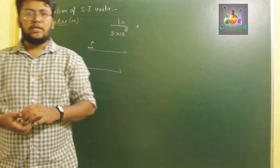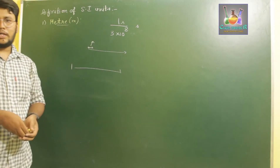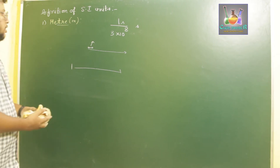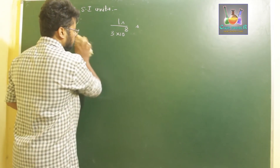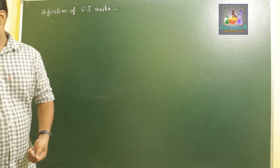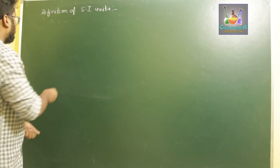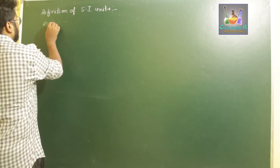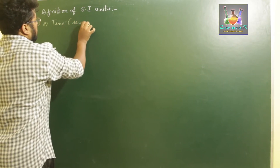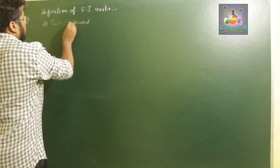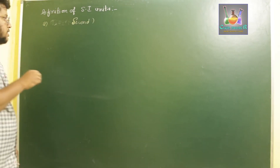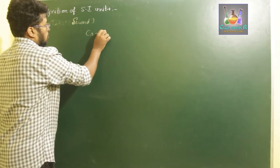Next is the definition of time. The second is defined with reference to atomic radiation. In order to define a second, we consider an atom of cesium-133.